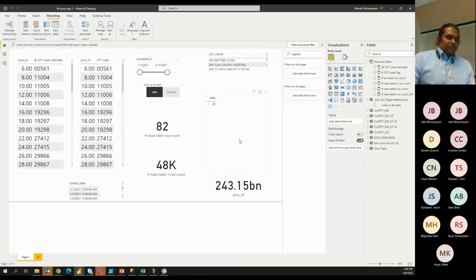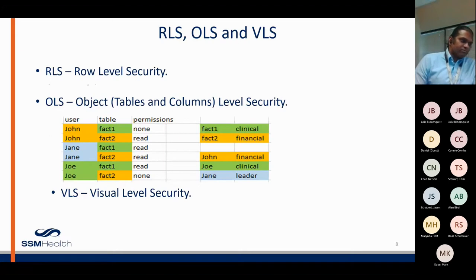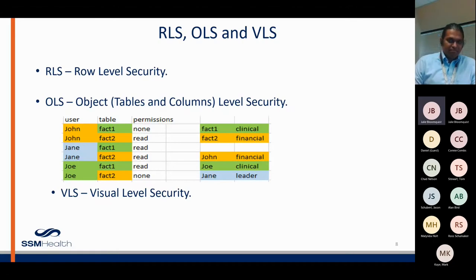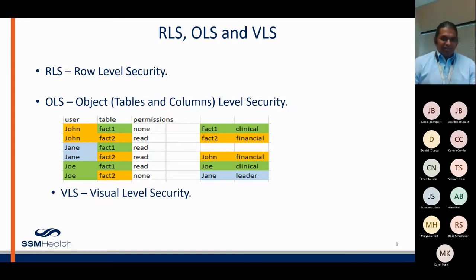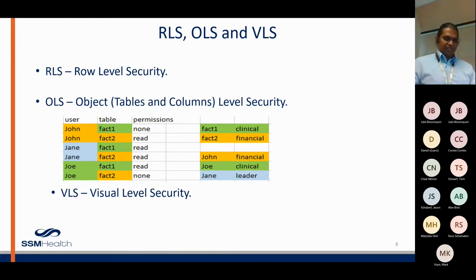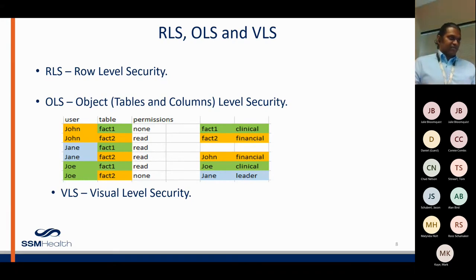Any questions on role-level security, object-level security at the table and column level, and visual-level security? I'm not seeing any questions in the chat. Feel free to write in the chat or raise your hand and we can unmute you. I feel like these might be simpler concepts that people are already using. Whenever you're trying these out, you can have this video alongside and follow the same steps I showed you.